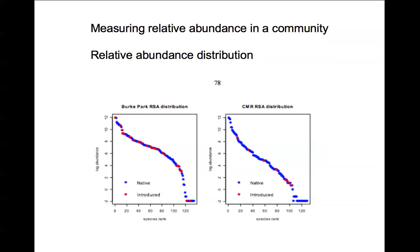If you're the most abundant, you're ranked number one. If you're the least abundant, you have the highest rank — in this case about 125 different species.